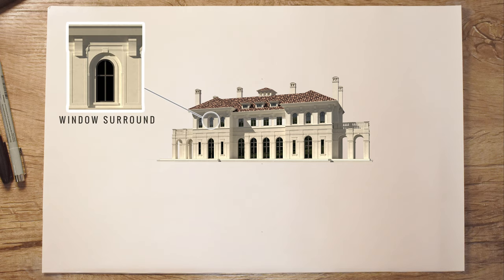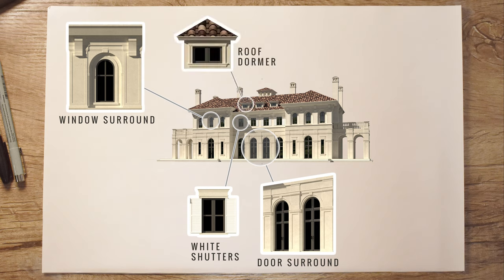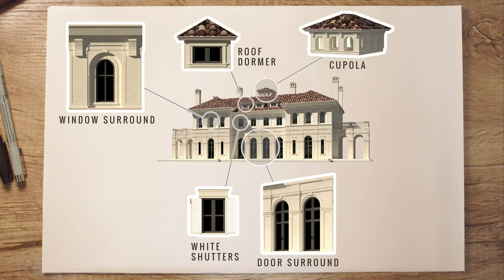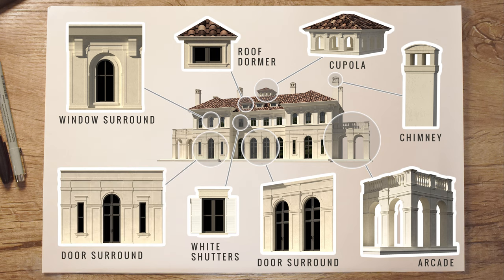To give you a close-up look at all these details: this is the window surround on the second floor, and this is what's surrounding the door on the first floor. We have the windows on the second floor with shutters on the left and right and precast detailing on top. We have these roof dormers, and the cupola with the three arches on each side. We have the chimneys with the ornamental cap, and the arcade porticos on the left and right. And this is the detail surrounding the doors and windows on the first floor of the hip bump out.